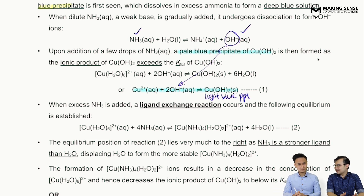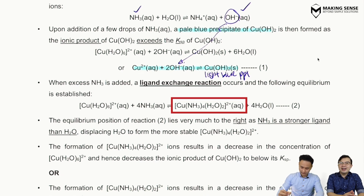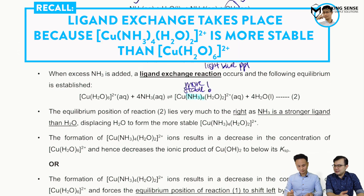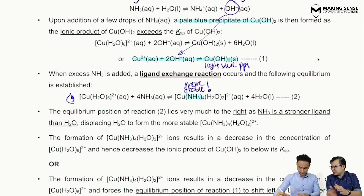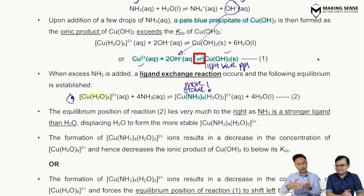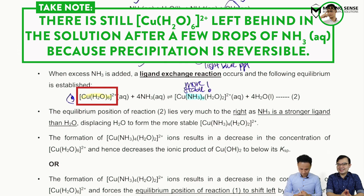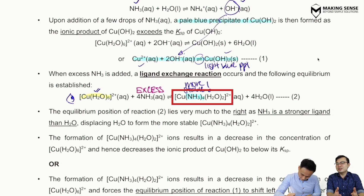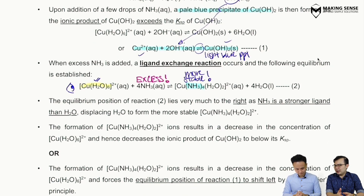In the presence of excess ammonia, the Cu2+ ions still present in solution form a more stable complex: the tetraamminecopper complex, [Cu(NH₃)₄]²⁺. From the concept of ligand exchange, the system always tries to form the more stable complex. An equilibrium is set up starting from the aqua complex — note that not all Cu2+ precipitates, because precipitation is reversible, so some Cu2+ remains in solution and complexes with excess ammonia.